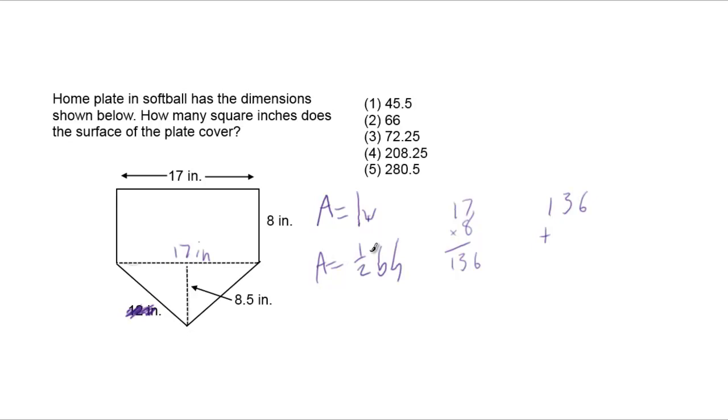Since multiplying by one-half is the same as dividing by 2, we just keep the 144.5 in our calculator, which is there after we multiply these two numbers, and we divide by 2 equals 72.25.